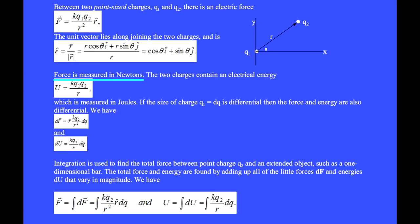Force is measured in newtons. The two charges contain an electrical energy U equals KQ1Q2 over R, which is measured in joules. If the size of charge Q1 is differential dq, then the force and energy are also differential. We have the differential force vector dF equals R hat times KQ2 over R squared dq, and the differential energy dU equals KQ2 over R dq.